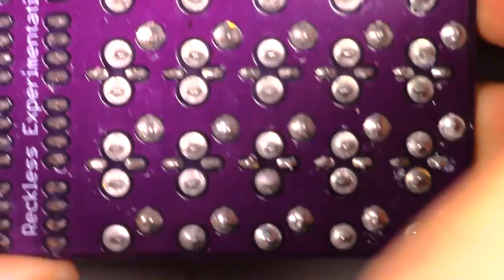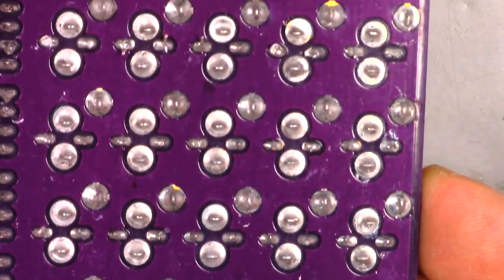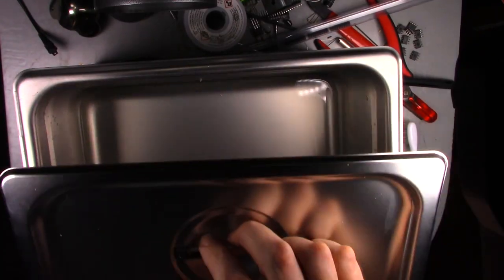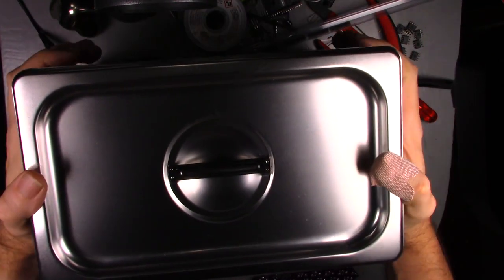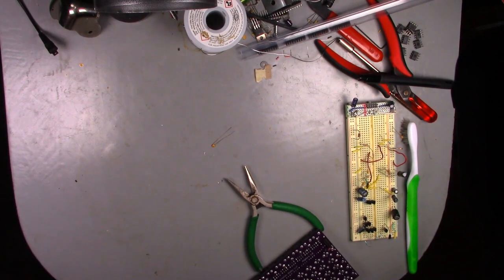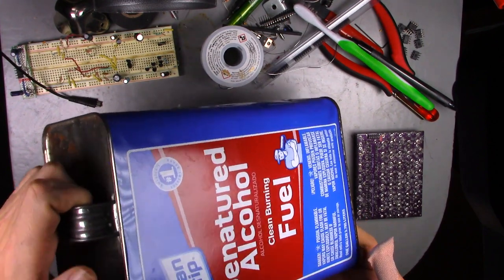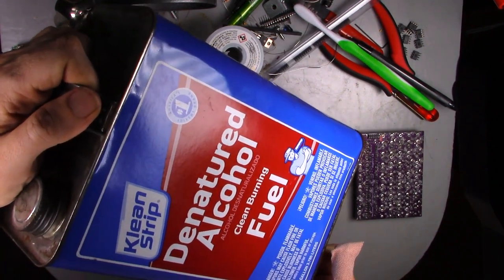The solvent can be reused to clean multiple PCBs before changing. So if you plan on doing more PCBs that day, just put the lid on the ultrasonic cleaner and save it for later. But if you're not going to clean another PCB for an extended period of time, I recommend transferring any remaining solvent to a more appropriate container.